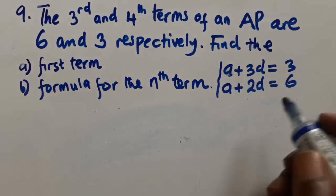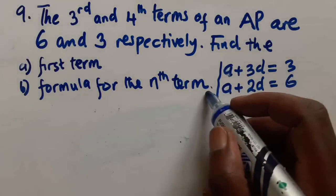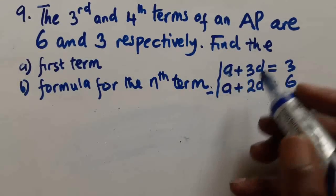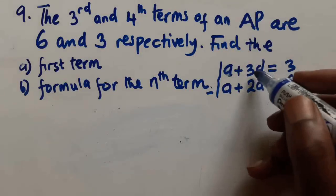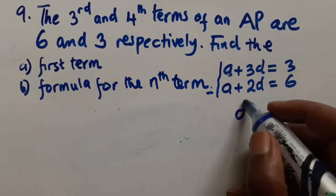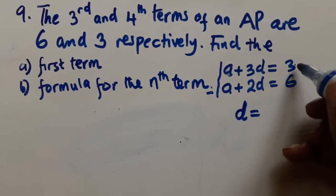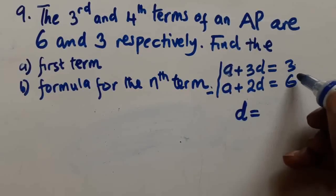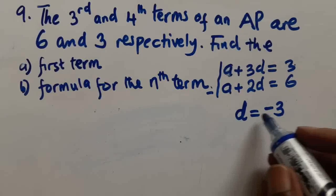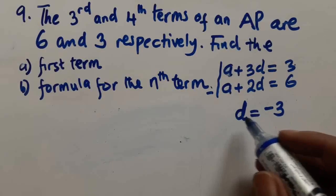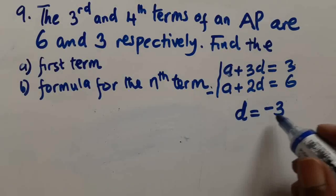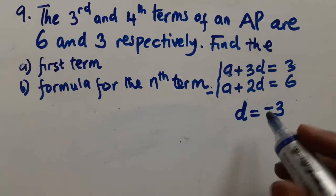To eliminate 'a', we subtract: a minus a gives zero, then 3d minus 2d gives d, and 3 minus 6 gives negative three. So d = -3. This is our common difference.